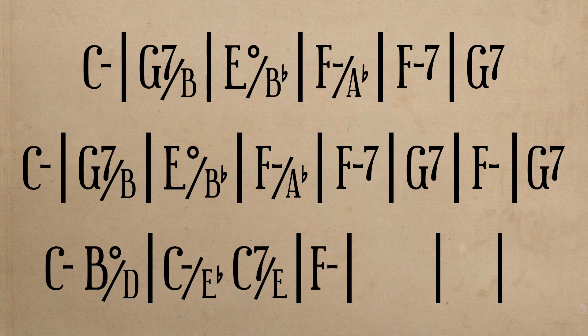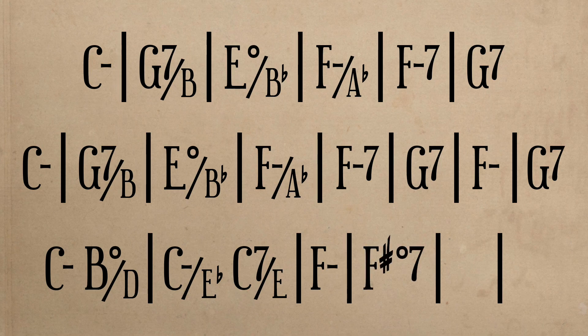Following the ascent to F minor, we hear an incomplete F sharp diminished 7, which is another chromatic chord used for, again, the sake of intensification, only this time it is directed towards G major, the 5. As a result, we can view F sharp diminished 7 as a 7 diminished 7 of 5.